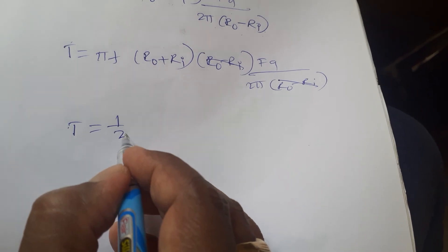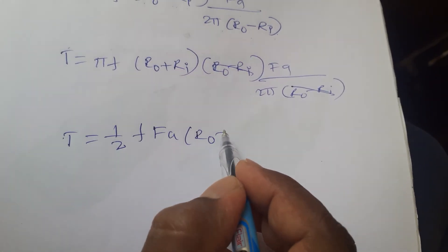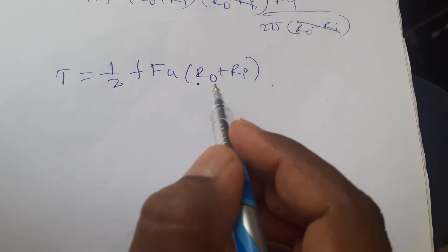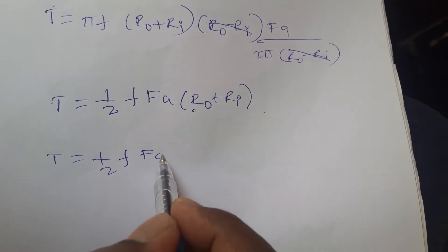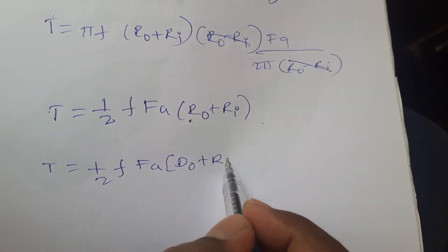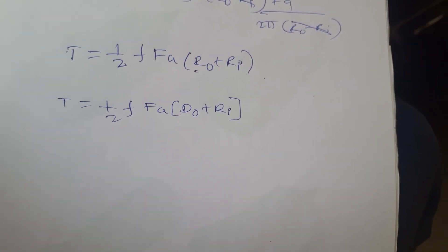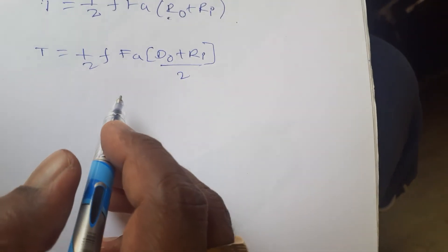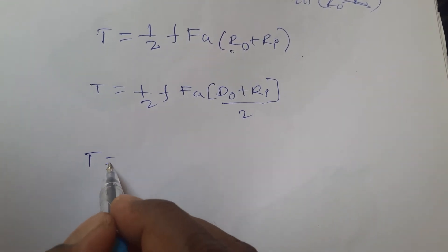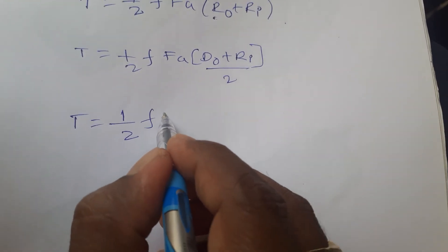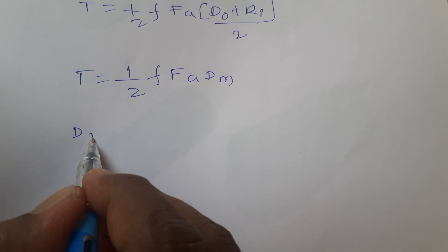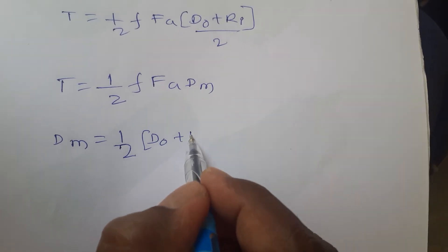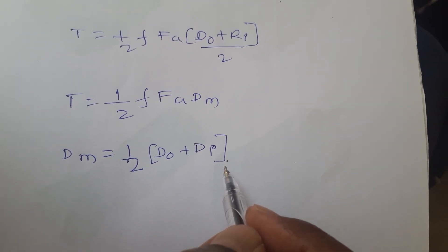So what are the things left out with you is, T is equals to half F, that is a friction, FA, R out plus Ri. If you want to write it down, this one in a diametrical form, T is equals to half FA, D out plus Ri. This is by 2 because of the conversion of radius into diameter. So at the end, you can write it down, T is equals to 1 by half F into FA, DM, where DM is equals to half D out plus Di. This is the end of the VR.